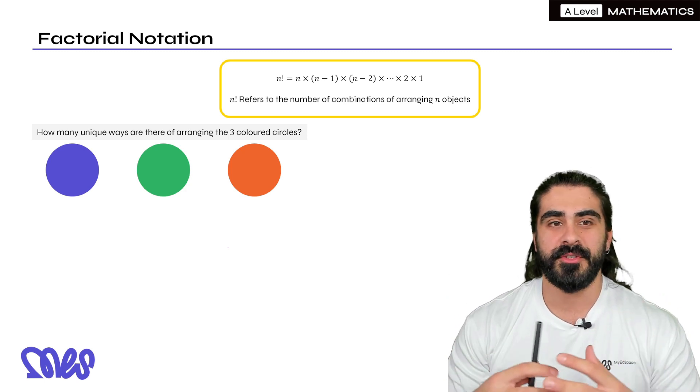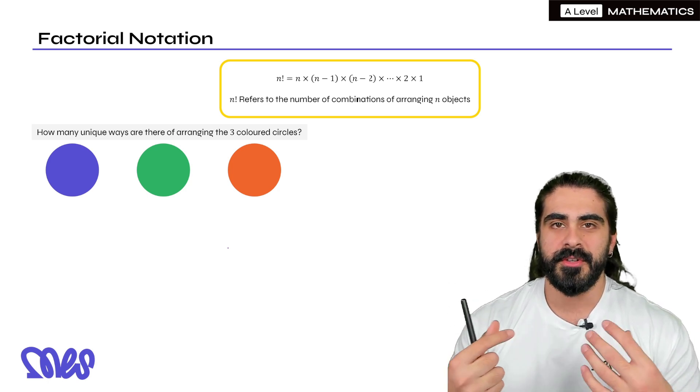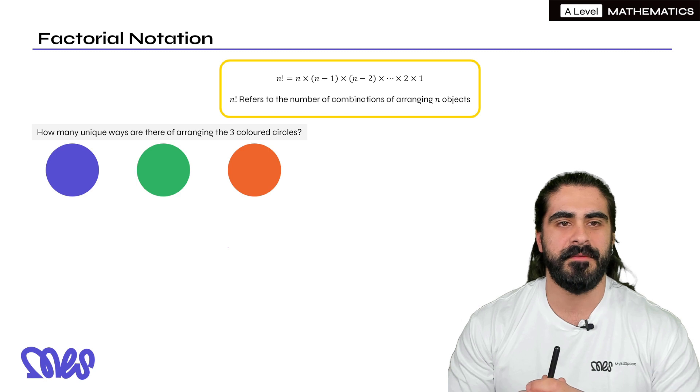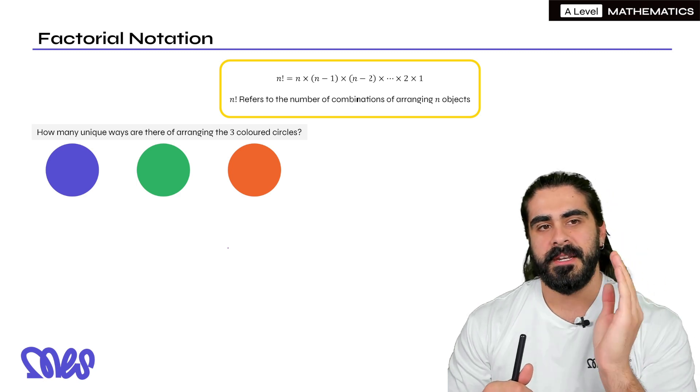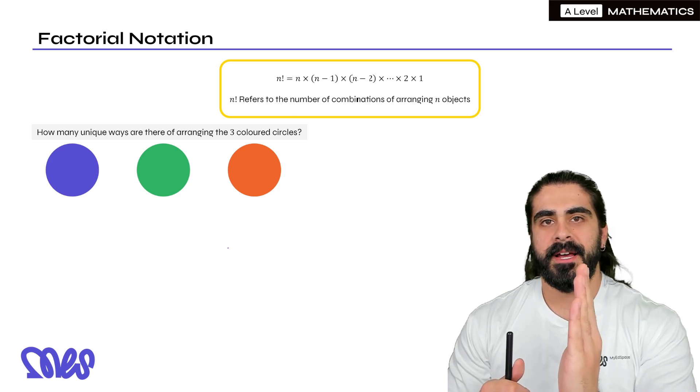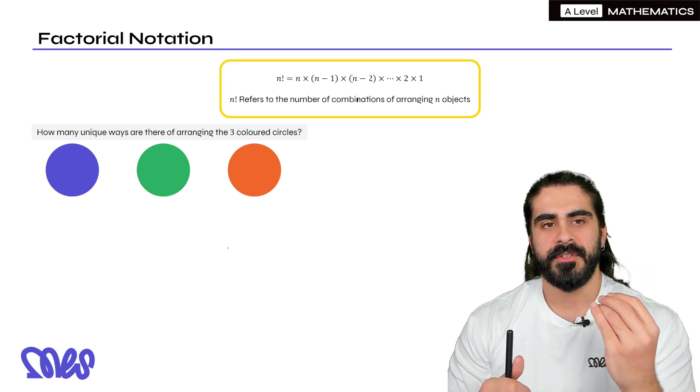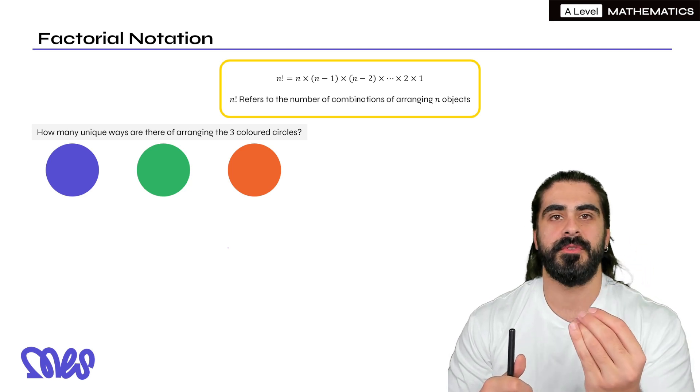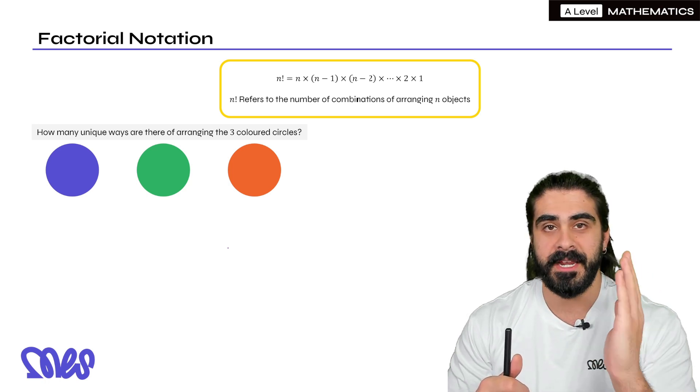Now what is factorial notation? As you can see in the highlighted box, n factorial, so the exclamation mark represents a factorial, is you take the number, and in this case it would be an integer, and you multiply it by all of the integers that precede that number. So for example, 5 factorial would be 5 times 4 times 3 times 2 times 1, and it ends at 1.